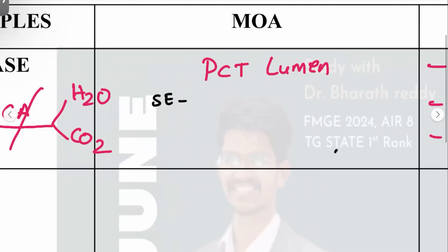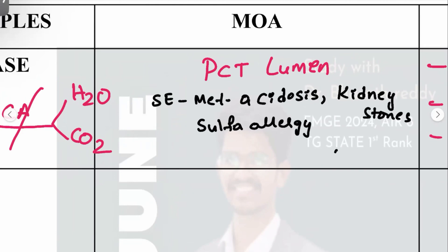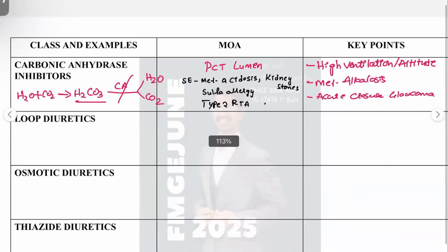The key side effects to remember for carbonic anhydrase inhibitors are: metabolic acidosis, kidney stones, and high risk of sulfa allergy. Type 2 renal tubular acidosis (RTA) is also a risk. All these can occur with carbonic anhydrase inhibitor drugs.